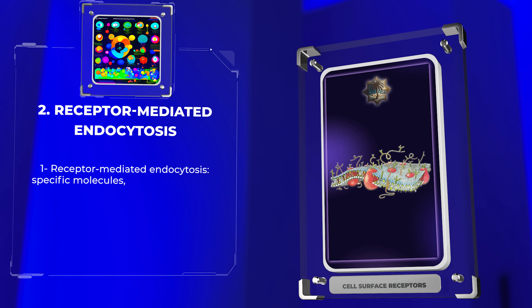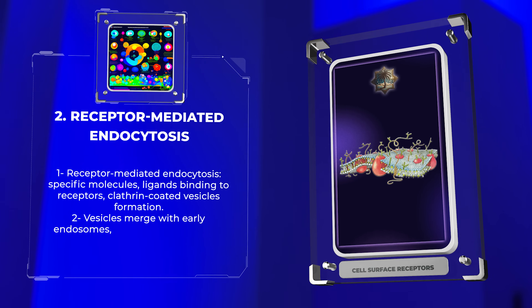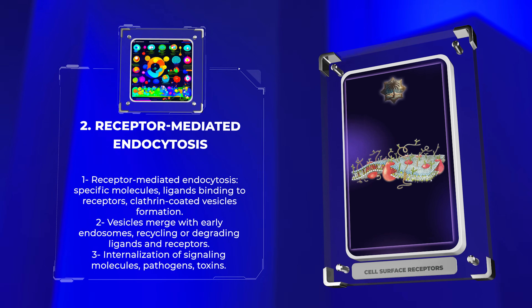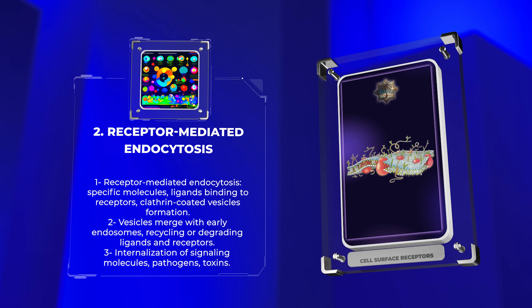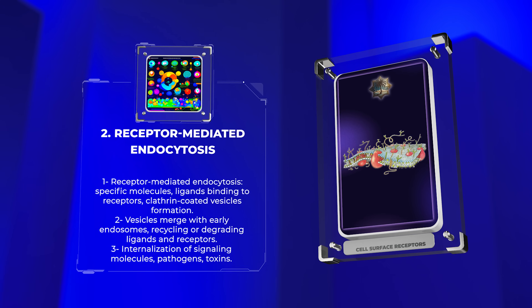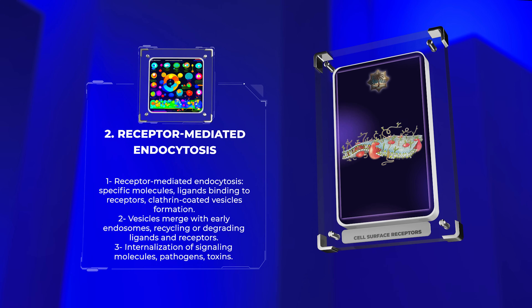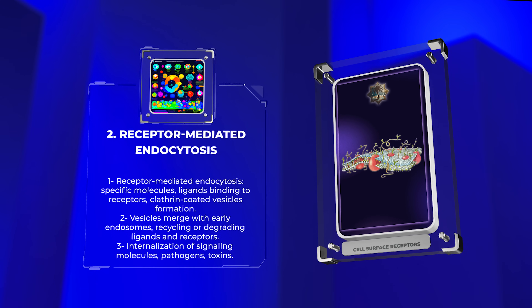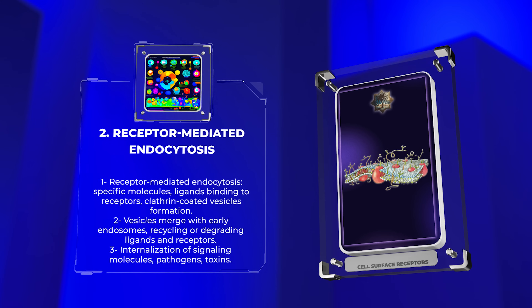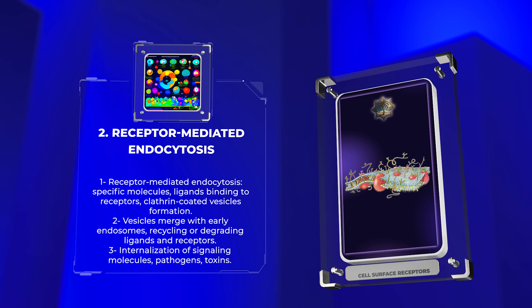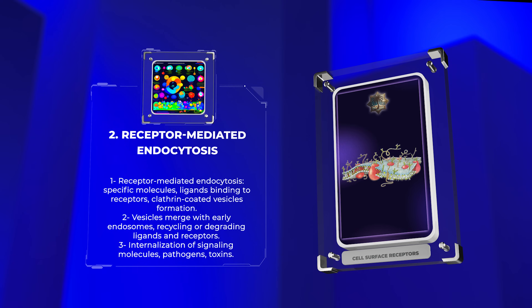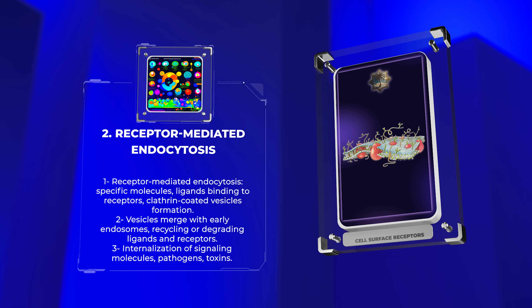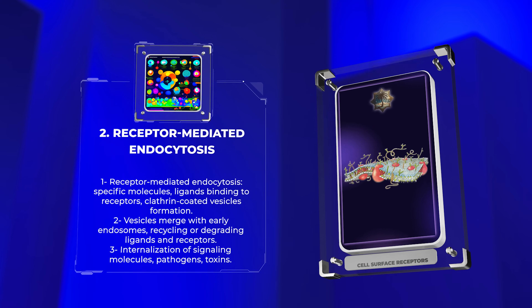Receptor-mediated endocytosis is a process that allows cells to take in specific molecules from the outside. It starts with ligands binding to receptors, which leads to the formation of clathrin-coated vesicles. These vesicles then detach from the cell surface and merge with early endosomes, where the ligands and receptors can be recycled or degraded. This process also helps internalize signaling molecules, pathogens, and toxins.